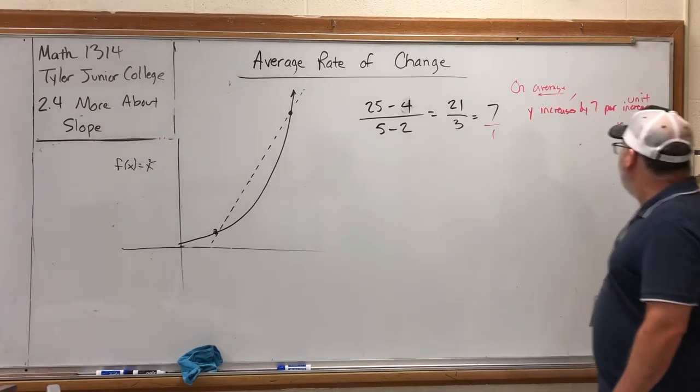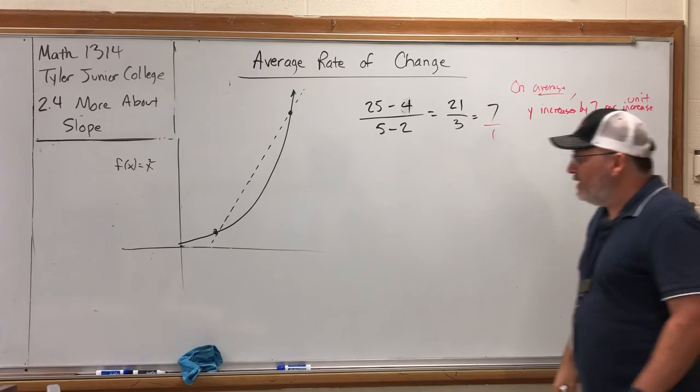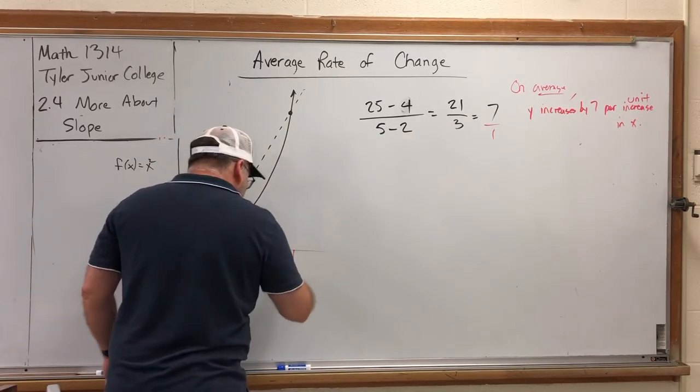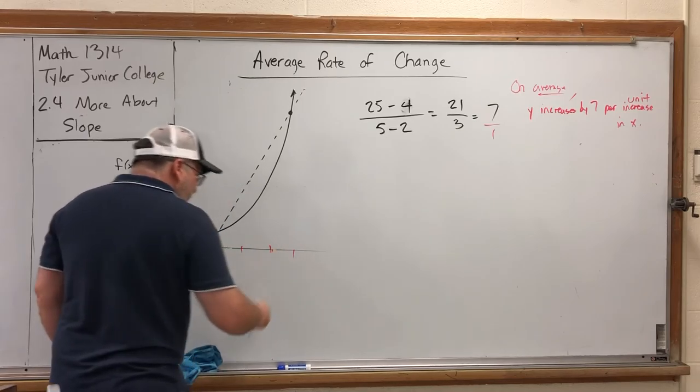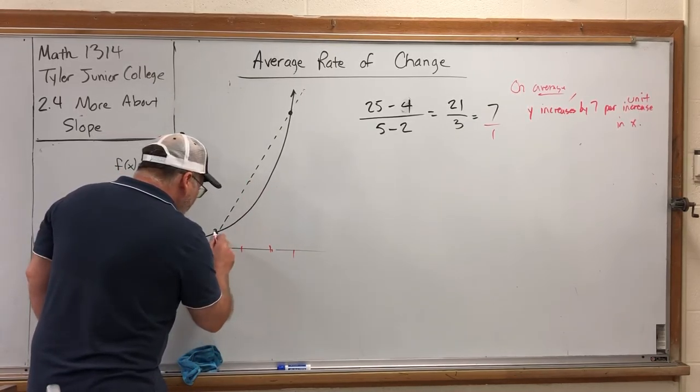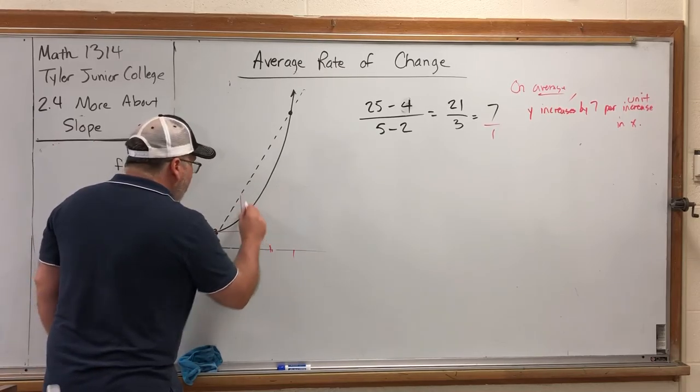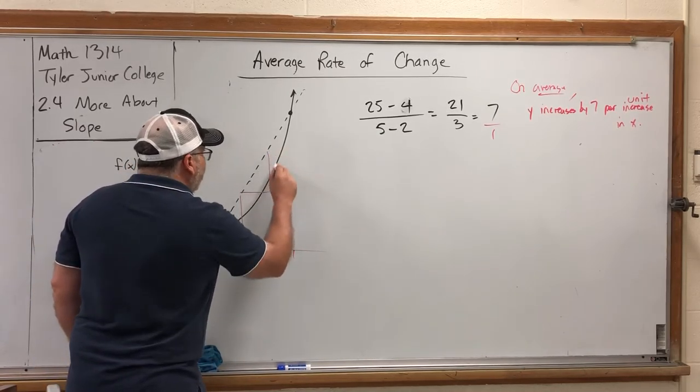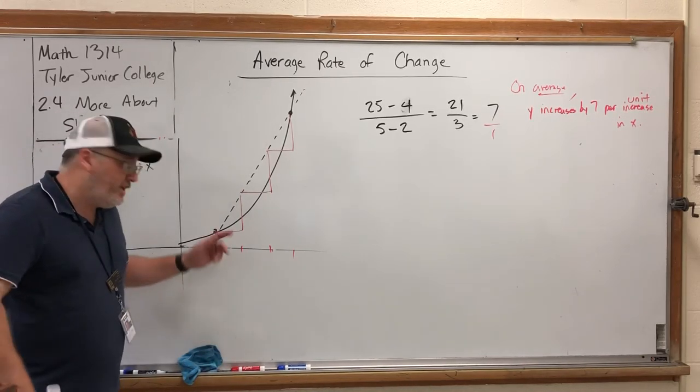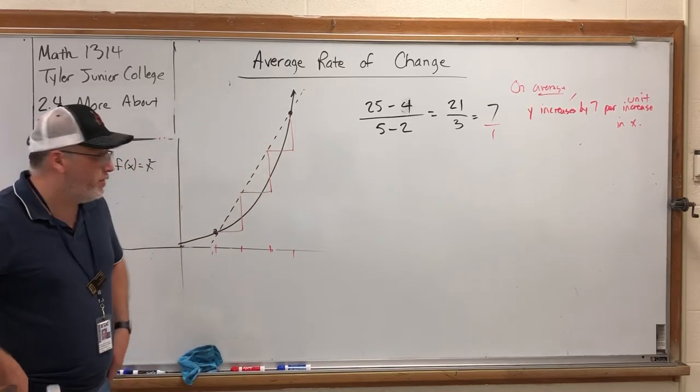So when we calculated the slope, we really calculated the slope of the line connecting these two points on this parabola. Can we interpret it the same? Yeah, we can say, on average, y increases by 7 per unit increase in x. According to that slope, if we go over 1, we go up 7.